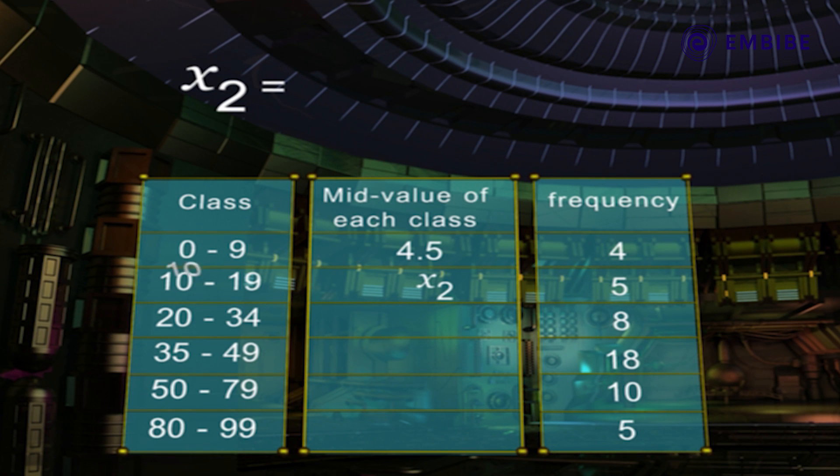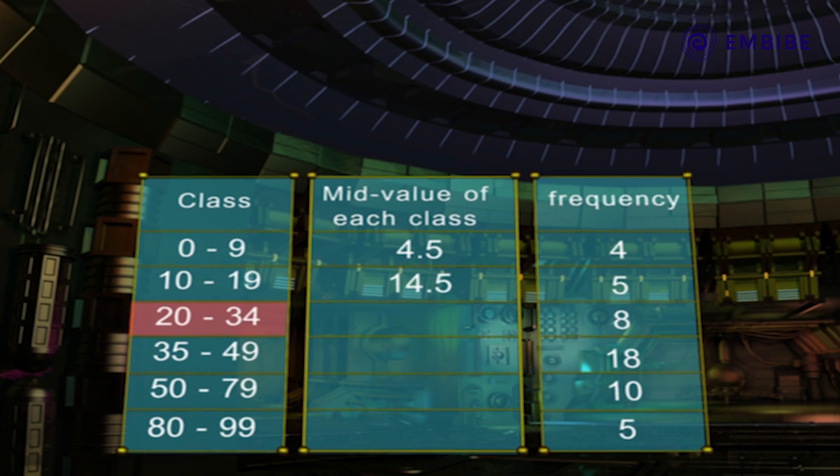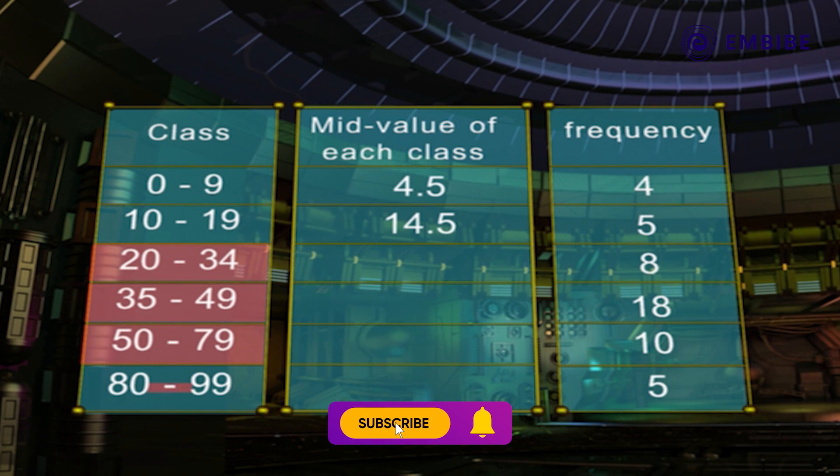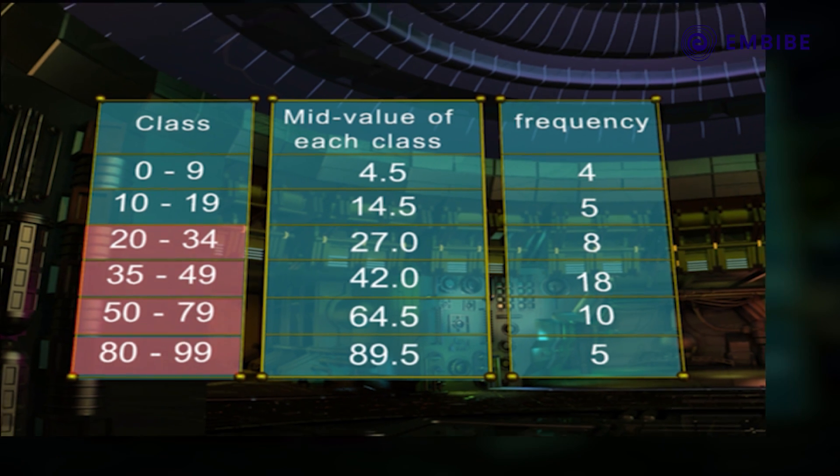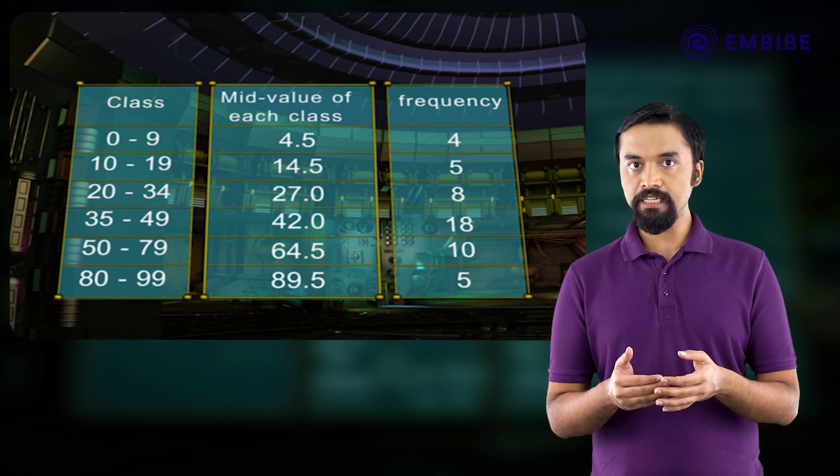Similarly, X₂ is equal to 10 plus 19, the whole upon 2, is equal to 14.5. In the same manner, the mid-values of the third, fourth, fifth and sixth classes are 27.0, 42.0, 64.5 and 89.5 respectively.